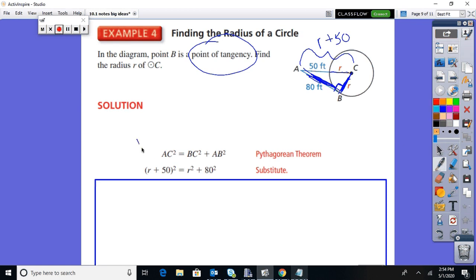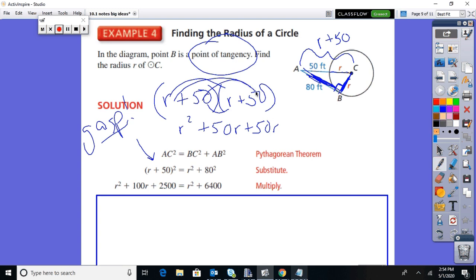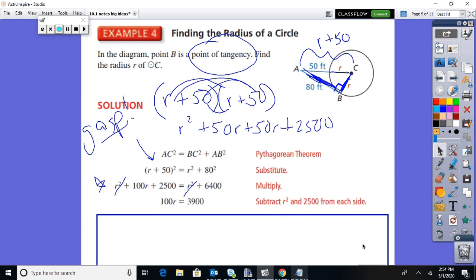So Pythagorean theorem: R plus 50 squared equals R squared plus 80 squared. So you set up Pythagorean theorem. Now what are we going to do with this quantity squared here on the left? Gasp. We're going to think back to algebra. You got to foil that bad boy. First times first, outer, inner, last. Remember that? It becomes R plus 50, R plus 50. So first times first, there's your R squared. Outer is 50R, inner is 50R. Last times last is 2500. So that's where that step is coming from. So foil that stuff.